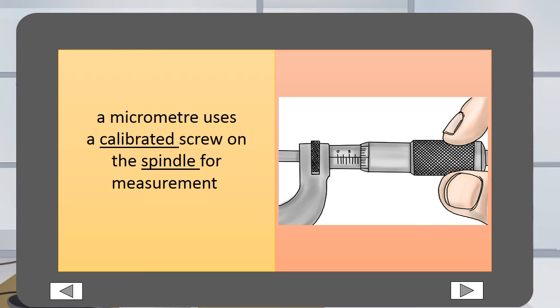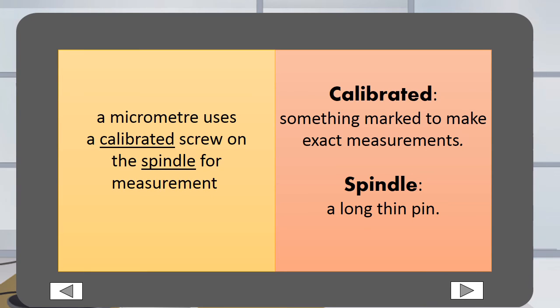A micrometer uses a calibrated screw on the spindle for measurement. Calibrated is something that is marked to make exact measurements. A spindle is a long thin pin.